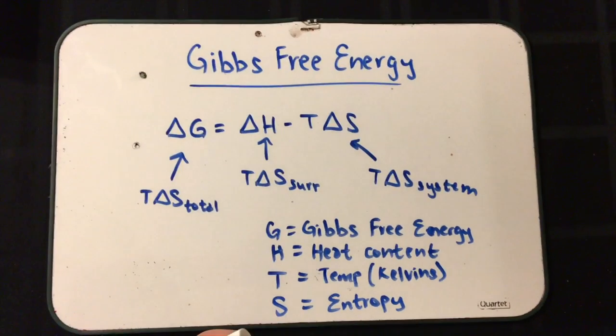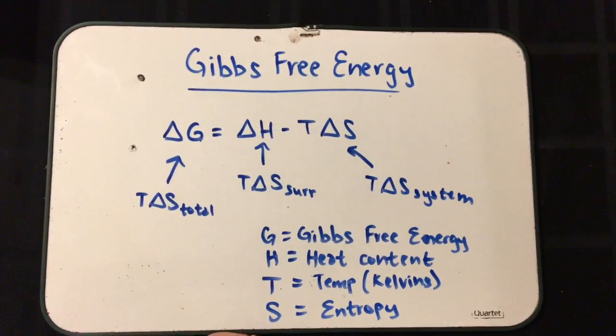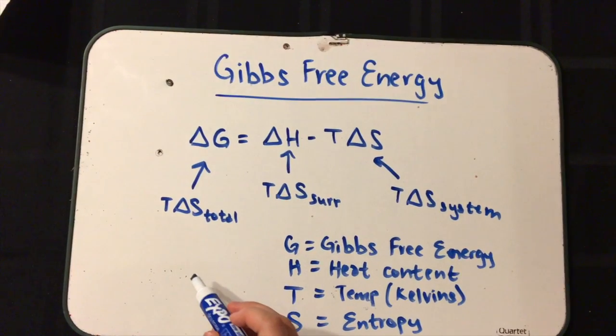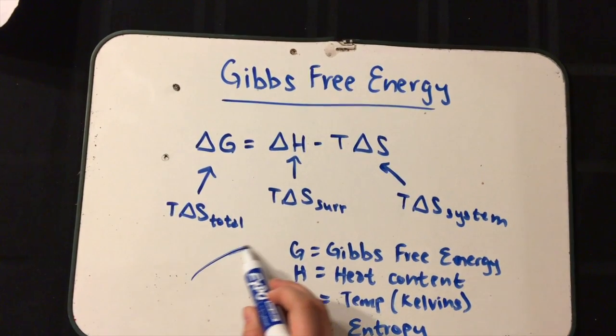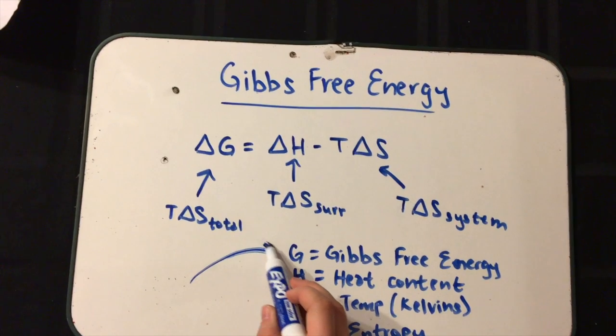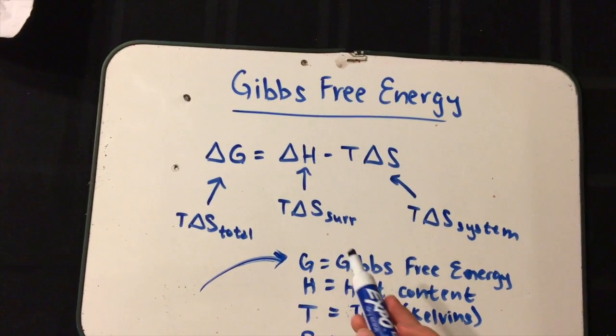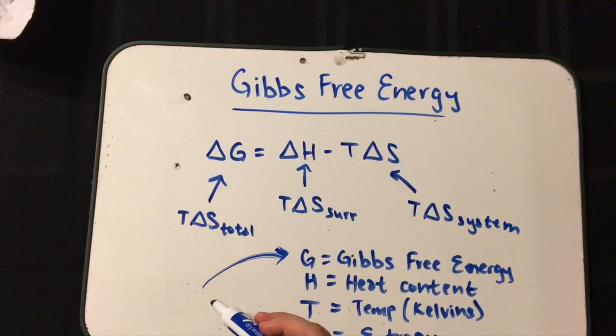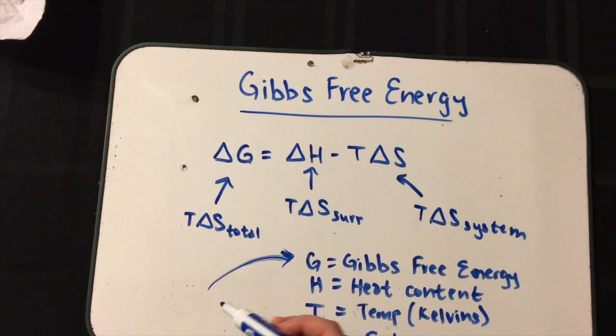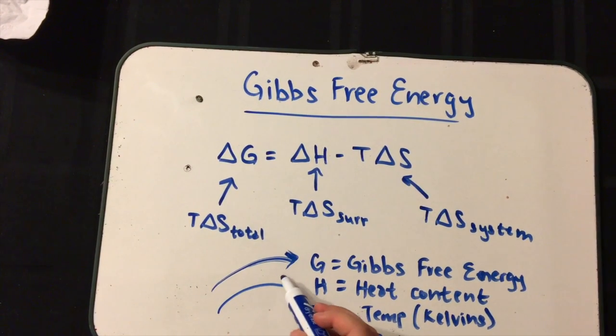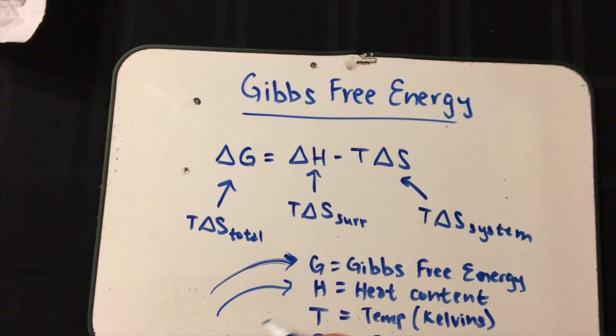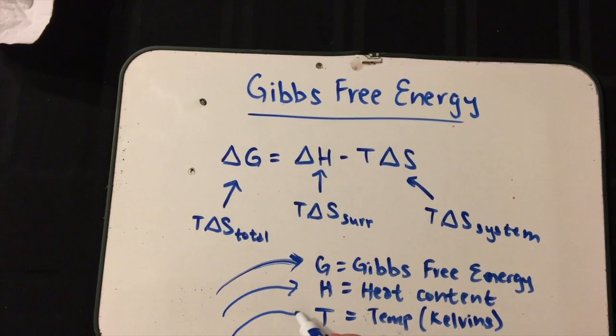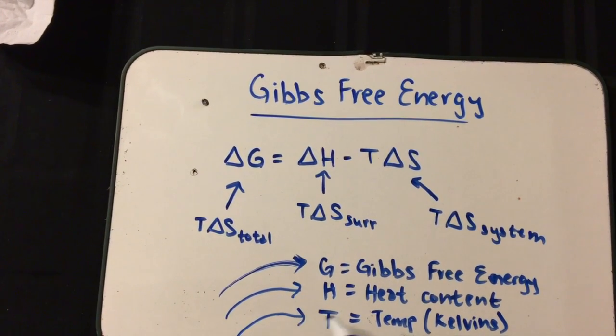We touched briefly on entropy earlier when I was discussing the second law of thermodynamics, but basically this equation delta G equals delta H minus T delta S is stating that the temperature of delta S total is equal to the temperature of delta S of the surroundings minus the temperature of delta S, which is the entropy, of the system.